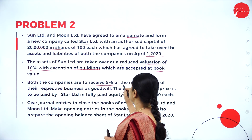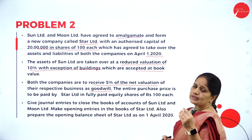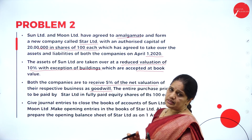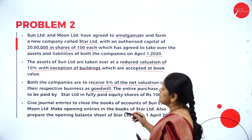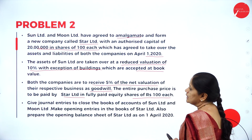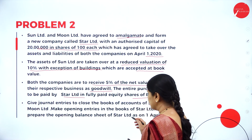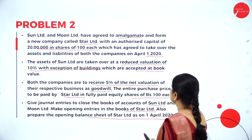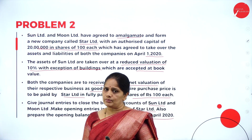Both the companies are to receive 5% of the net valuation of the respective business as goodwill. Once you calculate the net asset, you calculate 5% of that and add it as goodwill. The entire purchase price is paid by Star Limited in fully paid equity shares of rupees 100 each. We need to give journal entries to close the books of Sun Limited and Moon Limited, make opening entries in Star Limited, and prepare the opening balance sheet of Star Limited as on 1st April 2020.